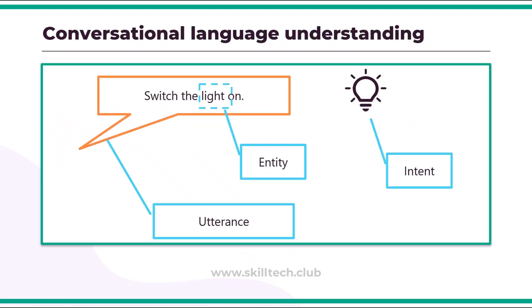Let's understand how the conversational language model works. The Language Service enables you to train a language model that can interpret natural language commands. The language model consists of three primary components. The first is known as utterances — phrases that are used by users, essentially whatever the user is going to say or type. For example: 'Switch the light on.'